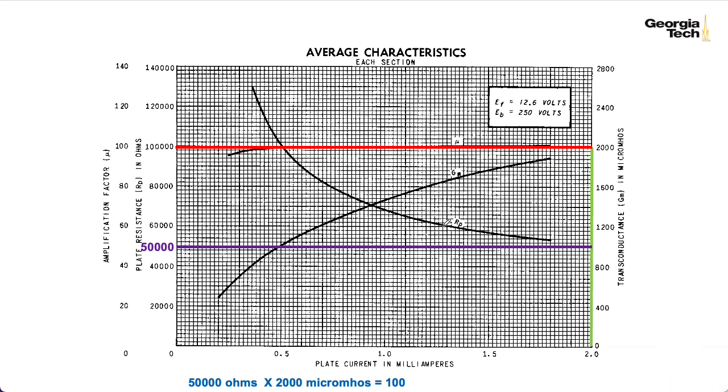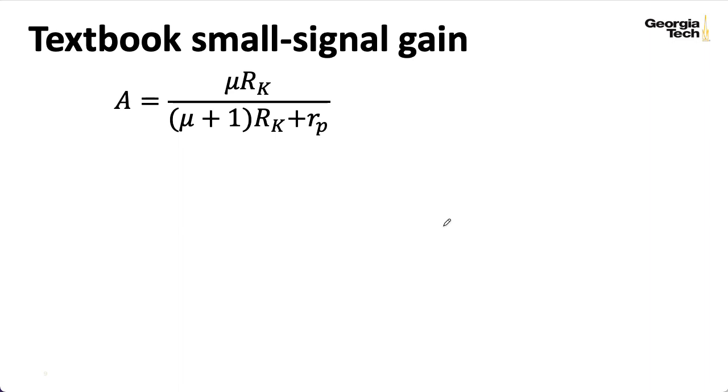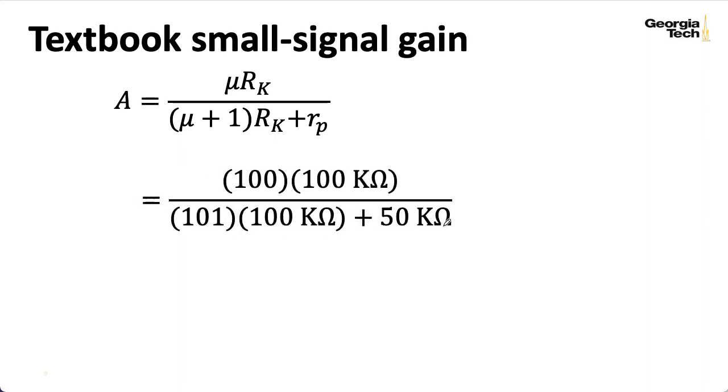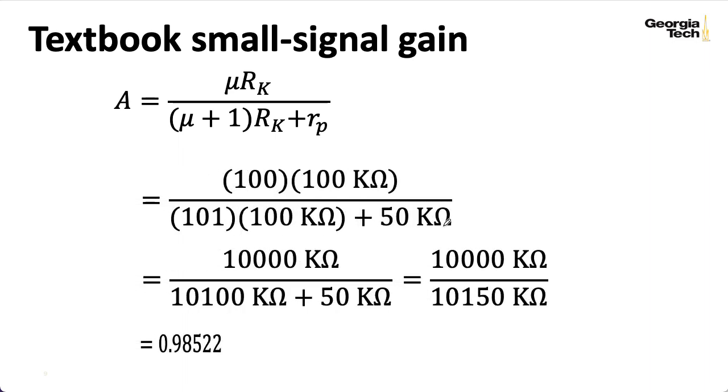Now, if I take those numbers and plug them into my formula for the small signal gain, I wind up with something like 0.985. So, that's something pretty close to 1. And, even if our analysis is a little bit off, and my value for rp isn't correct, I'll still wind up with something pretty close to 1. It's a cathode follower. It's going to work as a cathode follower. It will give me a gain reasonably close to 1.